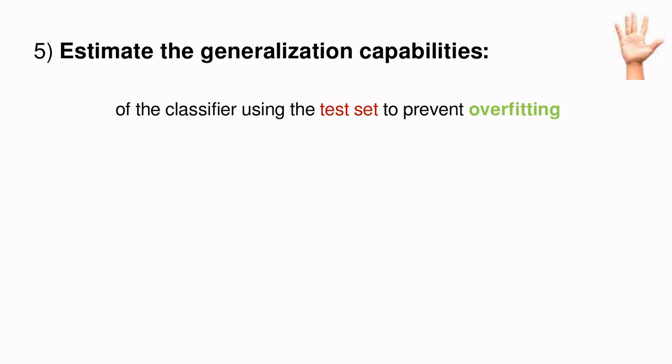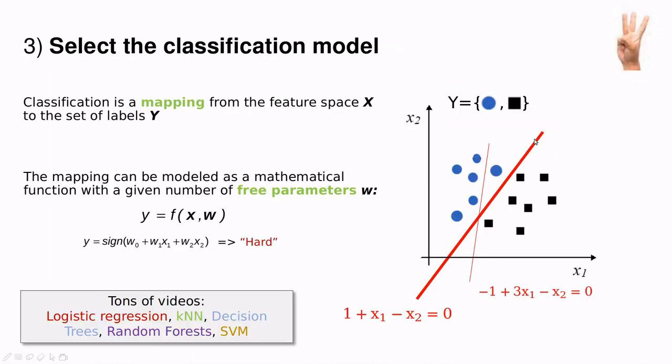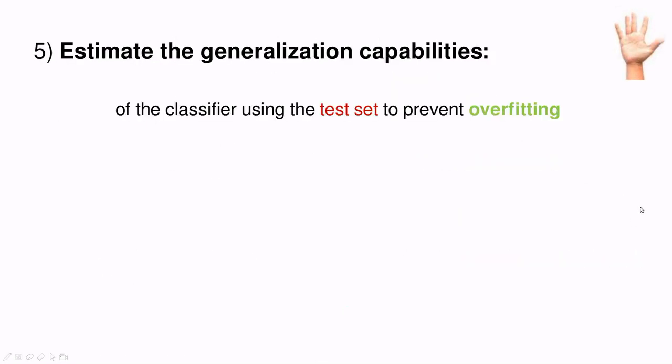We are at the end of this trip. So next step, step number five, estimate the generalization capabilities. So a model is not good if it's able to discriminate well. The thick line in principle looks very nice because it did perfectly with this dataset. But what if now we add a new data point? So this is what we call generalization. So here you have three possibilities.